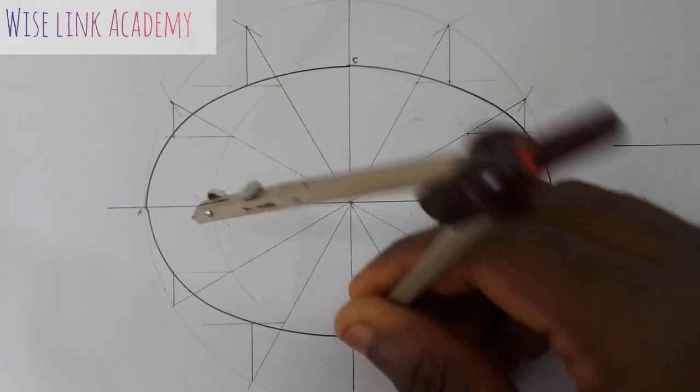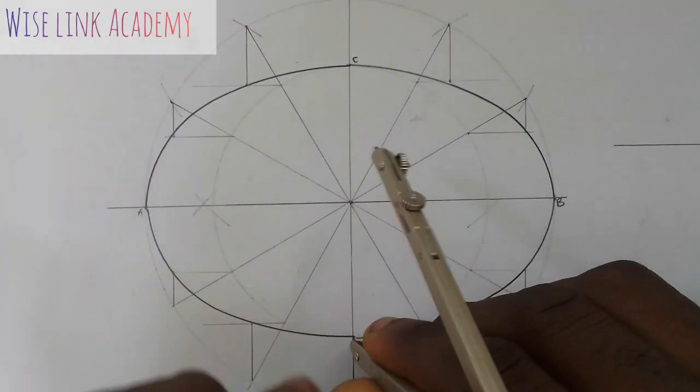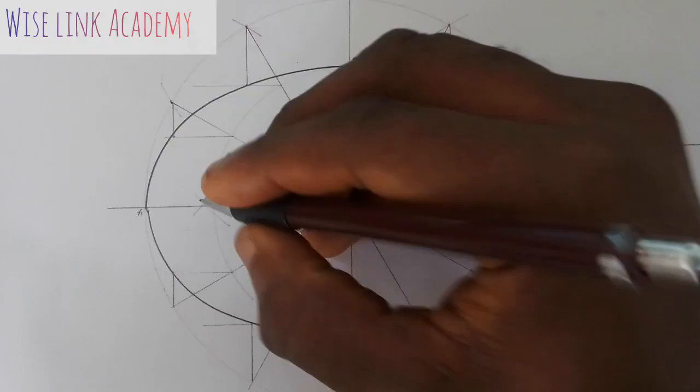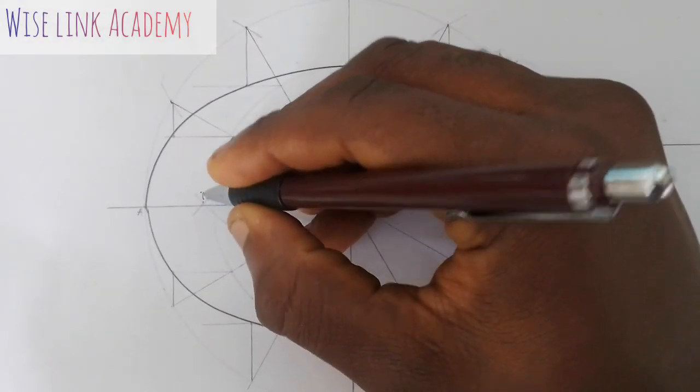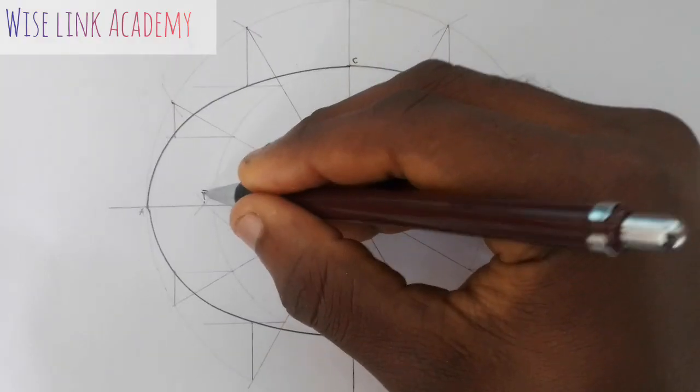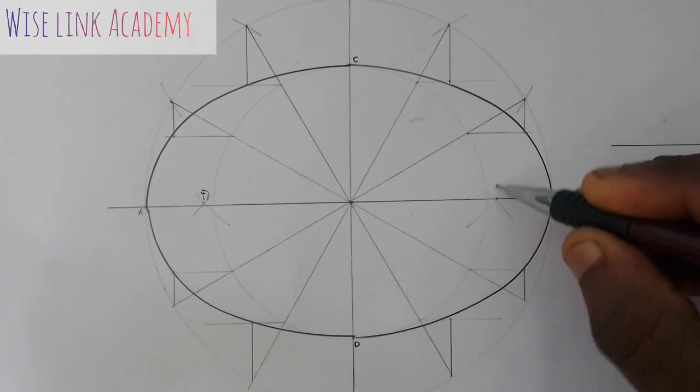Then, come to D, cut the arc. Then cut the arc. So, where the arc cut is at this point. Call it F1, F1, and call it F2.